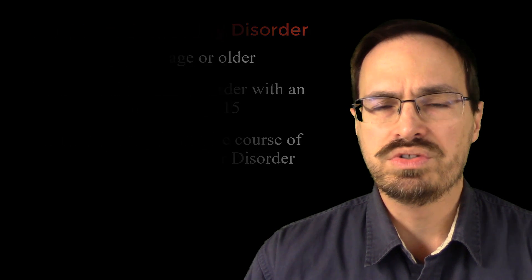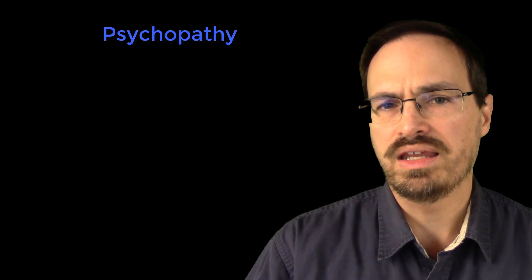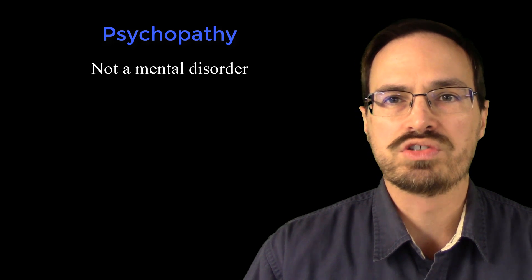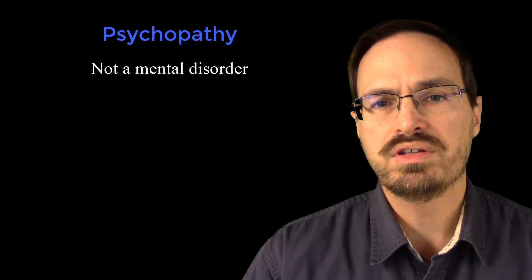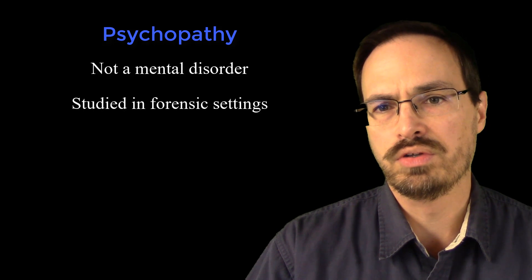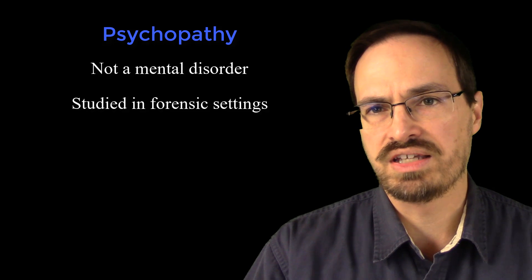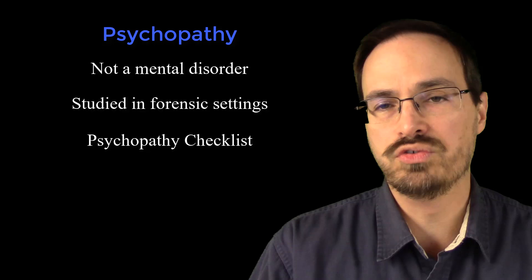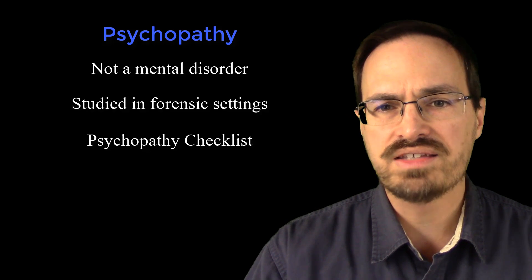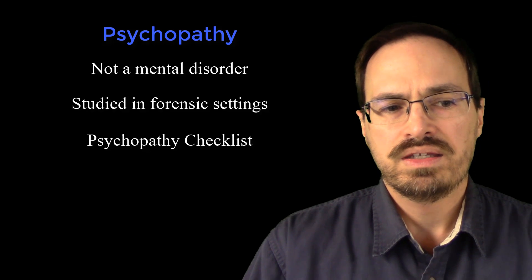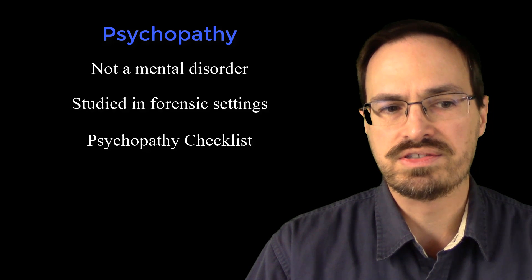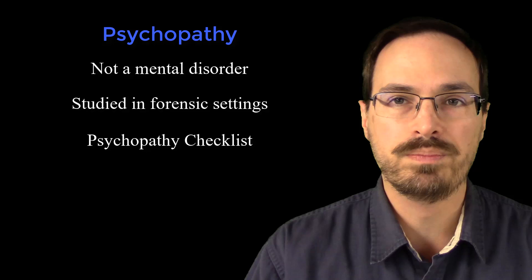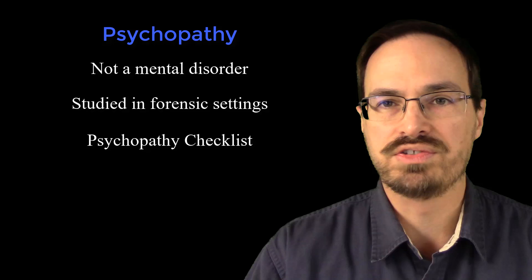Moving on to the construct of psychopathy, we see that psychopathy is an area that is studied — it is not a mental disorder. Someone cannot really be diagnosed as having psychopathy in a technical sense, whereas antisocial personality disorder is a formal diagnosis. Psychopathy is often used in forensic settings, and one of the most popular instruments to measure it is the Psychopathy Checklist Revised (PCL-R). The cutoff score for the prototypical psychopath is 30, and for high psychopathy the cutoff score is 22. Even though someone cannot be diagnosed with psychopathy, it can still be made dichotomous, though it is more typically conceptualized as on a continuum, unlike antisocial personality disorder, which is usually conceptualized as dichotomous — either someone meets the criteria or they don't.